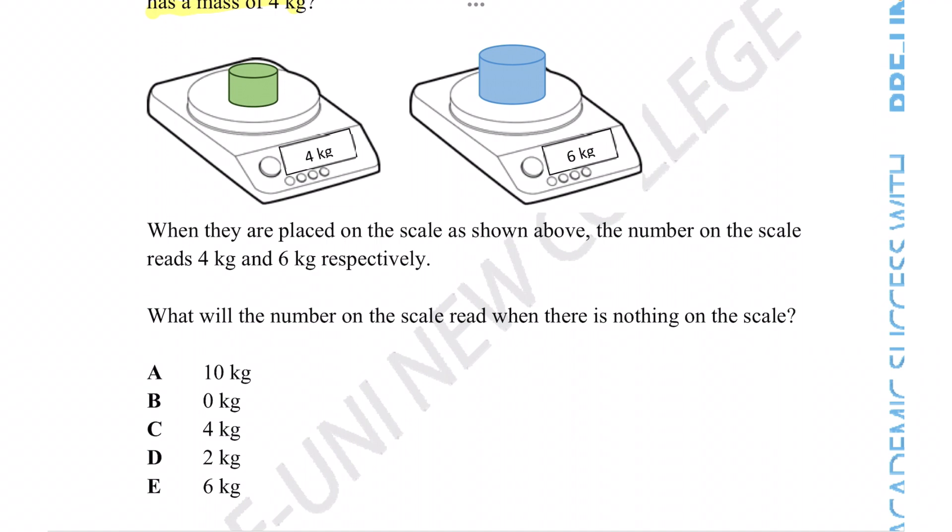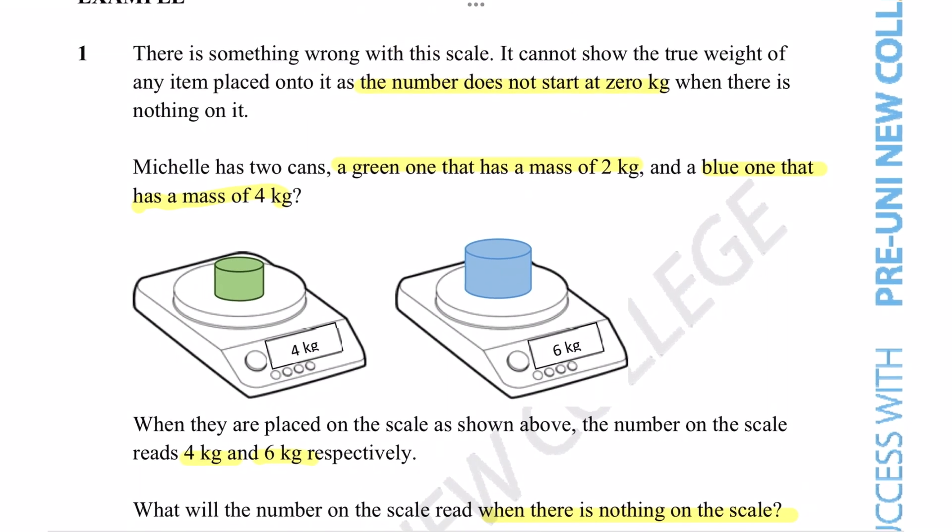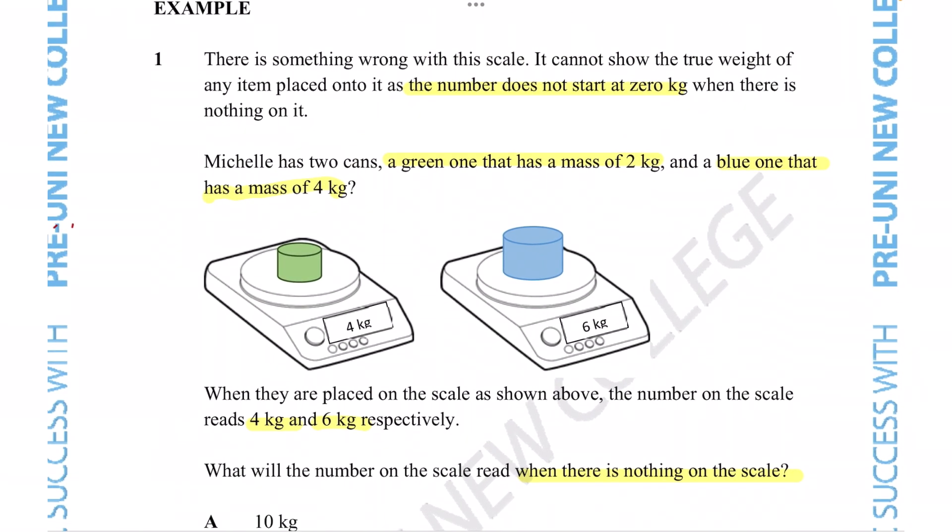When they are placed on the scale as shown above, the number on the scale reads 4 kg and 6 kg respectively. What will the number on the scale read when there is nothing on the scale?